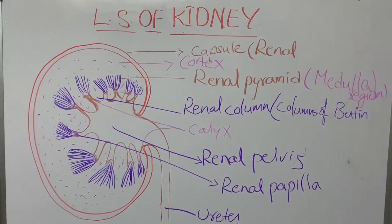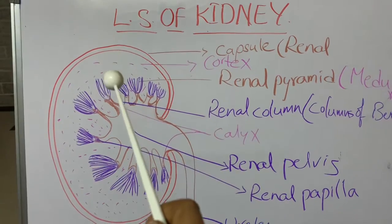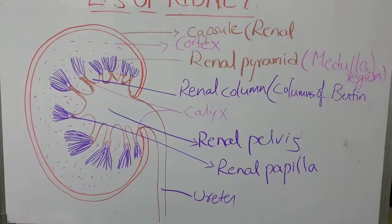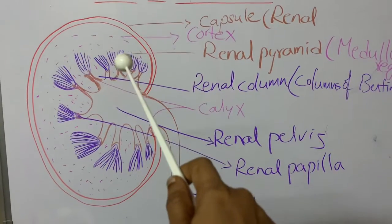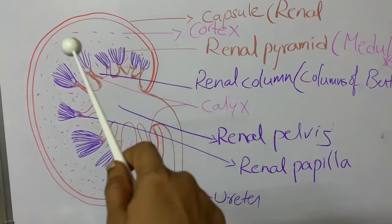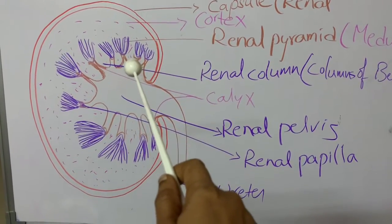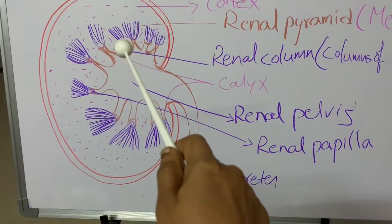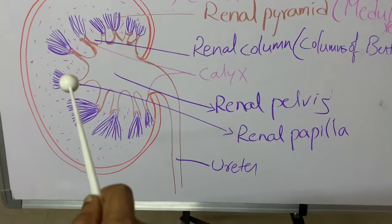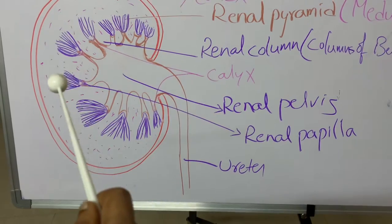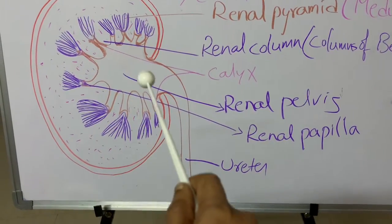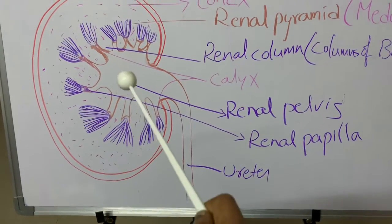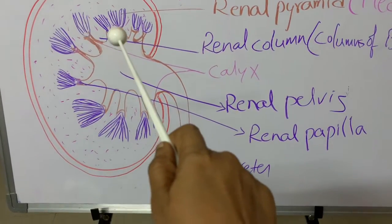For examination purposes: the projections of the cortex into the medullary region are known as renal columns or columns of Bertin. These renal pyramids originate at the border between the cortex and medulla and terminate at the renal papilla. The collecting ducts of all the nephrons open into the pelvis region through the renal papilla.